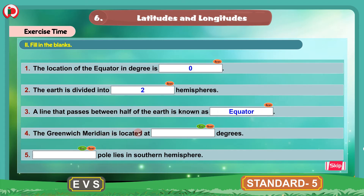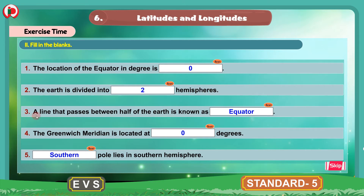Question 4: The Greenwich Meridian is located at 0 degrees. Question 5: Southern pole lies in southern hemisphere. So these are the fill in the blanks answers. The location of the equator is 0 degrees, the earth is divided into 2 hemispheres, the equator passes through half the earth, Greenwich Meridian is at 0 degrees, and the southern pole lies in the southern hemisphere.